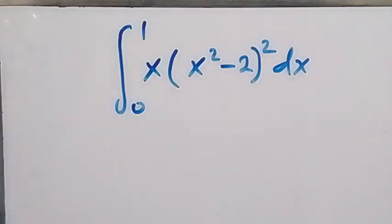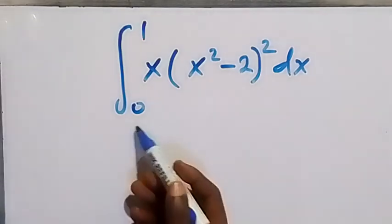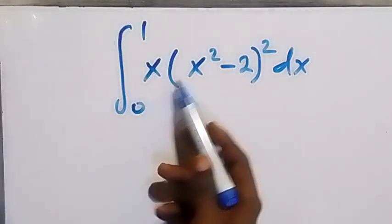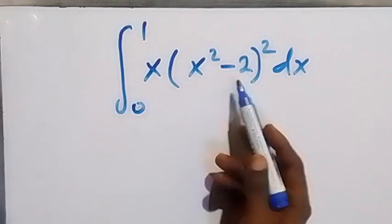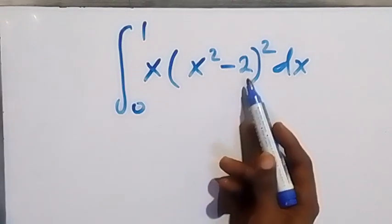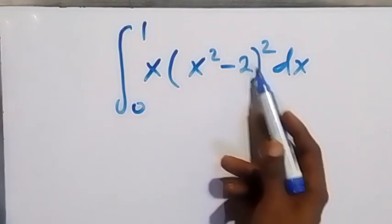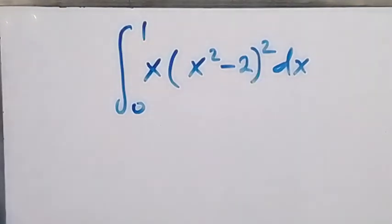Hello, you are welcome. We want to evaluate this definite integral: the integral from 0 to 1 of x times (x² minus 2) squared dx. From here we can simplify the integral.